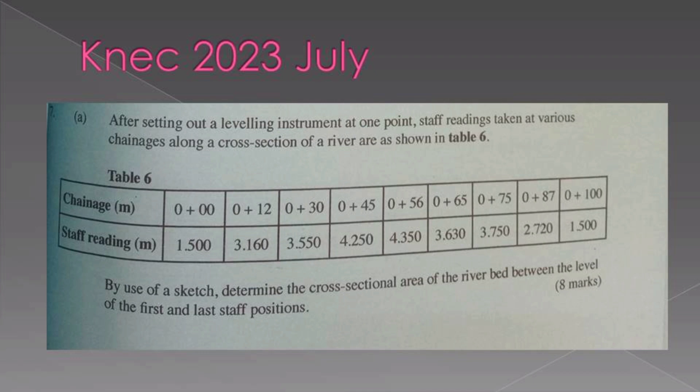After setting out a leveling instrument at one point, staff readings taken at various changes along a cross section of a river are shown in table 6. So there we have table 6. Under the table we have two rows: the chainage in meters and the staff readings in meters. We have a varying chainage from 0 to 12 to 30 to 45 to 56 to 65 to 75 to 87.